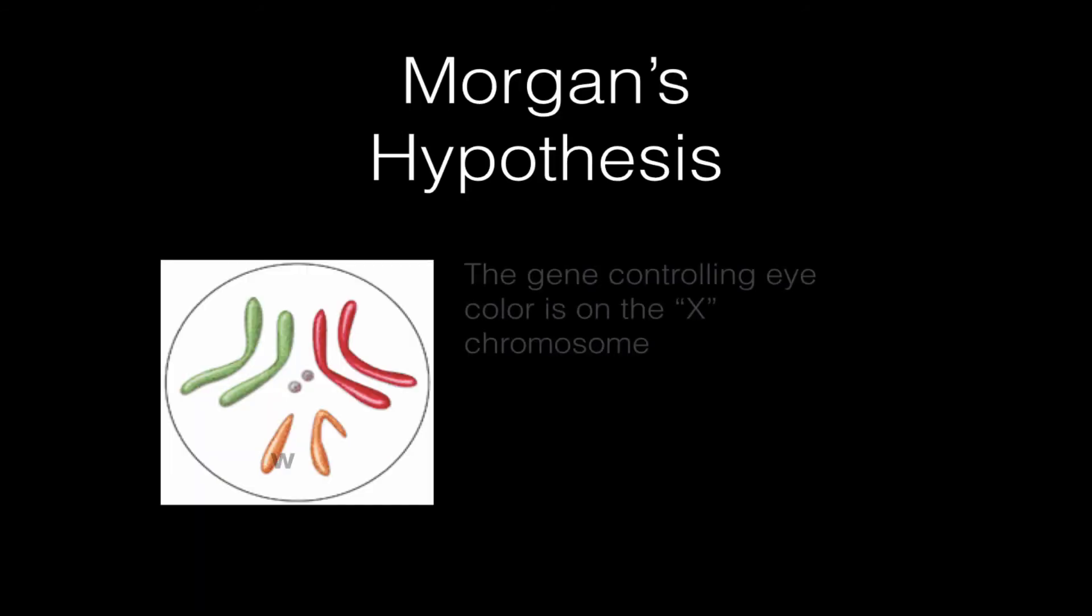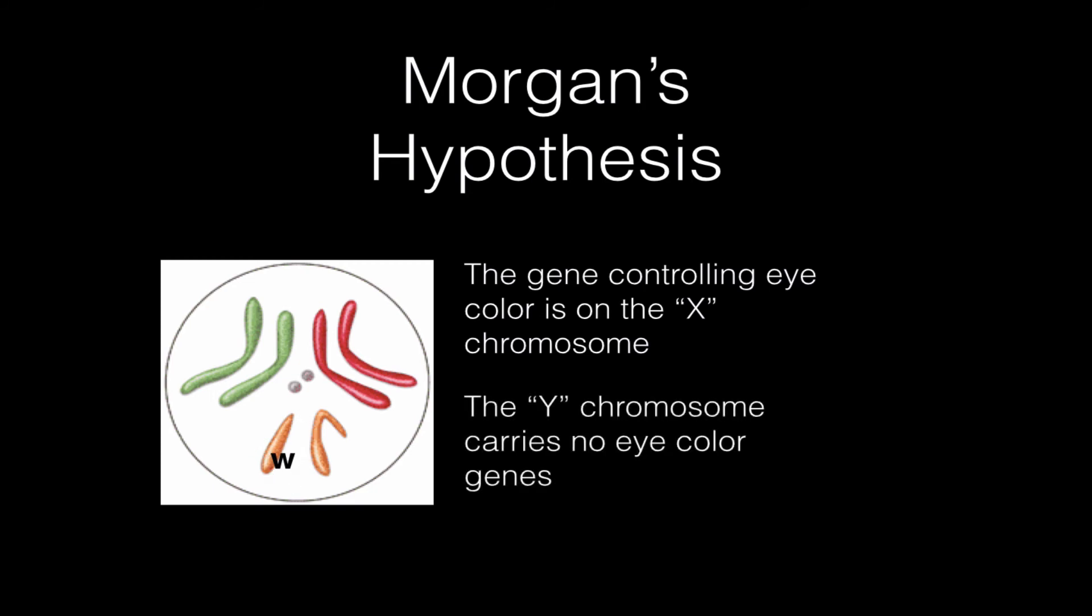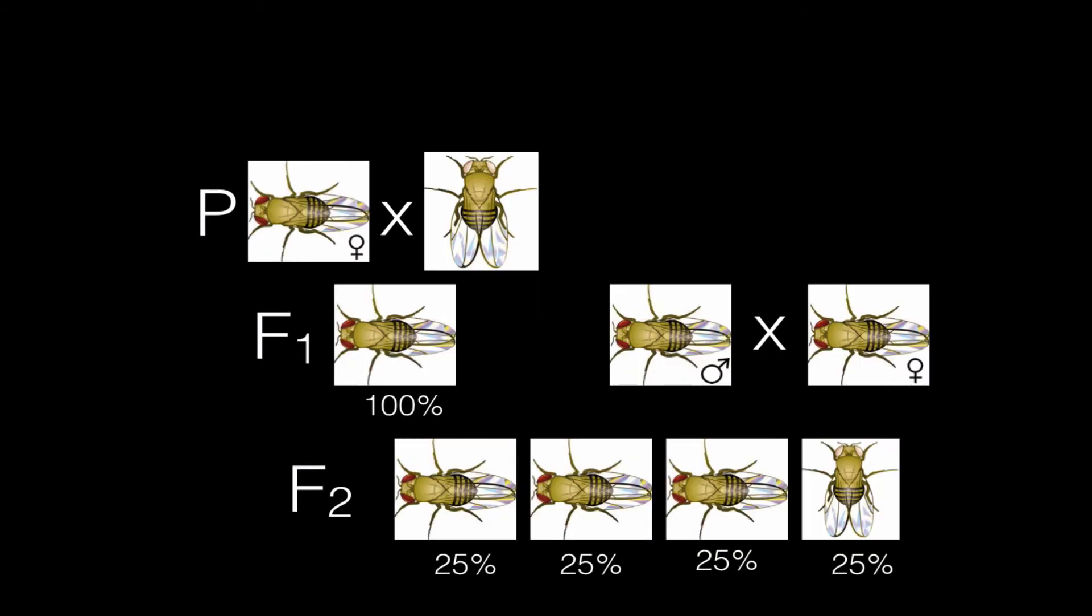Now, Morgan's hypothesis. He hypothesized that the gene controlling this white-eye mutation is actually located on the X chromosome. So remember, we're going to use this little w to represent that gene, and we're going to place it right here on the X chromosome. And the Y chromosome, just like in humans, is very small and doesn't carry a copy of this gene. So this individual down here, this male is little w and a Y chromosome. So he only has one copy of one allele that's controlling this white-eye mutation.